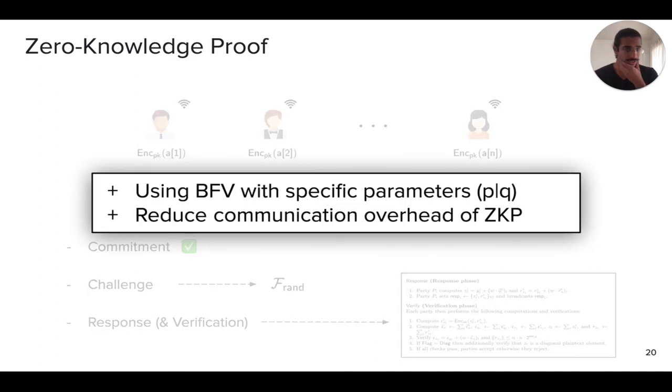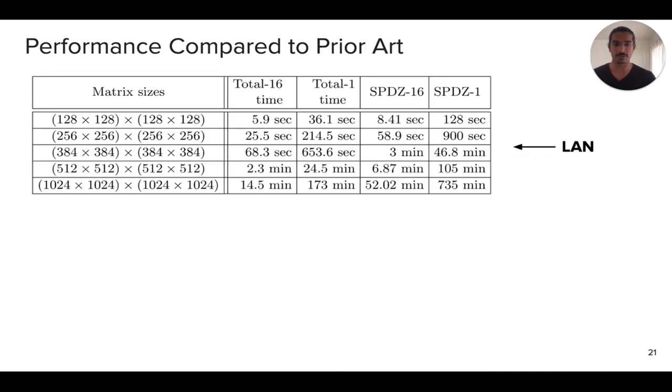That's the zero knowledge proof. The key differences here are the fact that for the first time we use BFV as the homomorphic encryption scheme and show that it has certain advantages. In particular, when we use it over certain parameter regimes, we can reduce the communication overhead of the zero knowledge proof by a small factor because it simply changes from a statistically hiding scheme to actually information theoretically hiding certain parameters. For the details, I'll defer to the paper. With that, I'm going to spend some time on actually talking about the evaluation of the experimental results of this work.